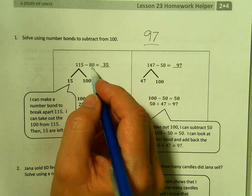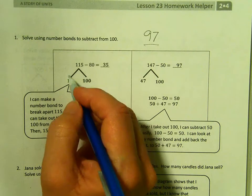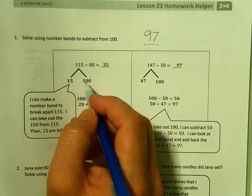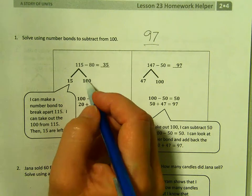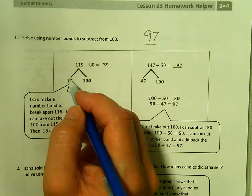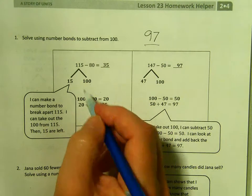So you have 8 tens taken from 10 tens. If you decompose 115 into 15 and 100, super easy to subtract 100 minus 80, and then you just add 15 back in. So that's what we're working on.